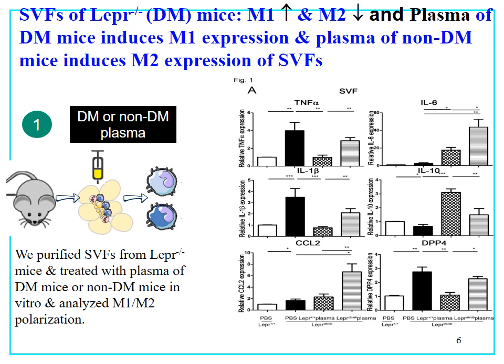First, we harvested the SVF from db/db mice and control mice and examined TNF-α, IL-6, IL-1β, IL-10, CCR2, and DPP4 expression of SVF. We found that SVF from db/db mice demonstrates an increase of TNF-α, IL-1β, DPP4, and CCR2 in comparison with control mice.